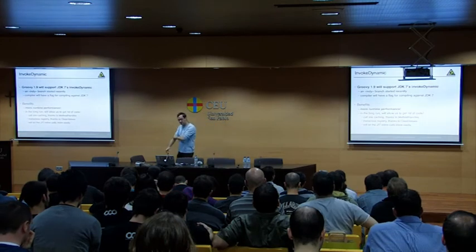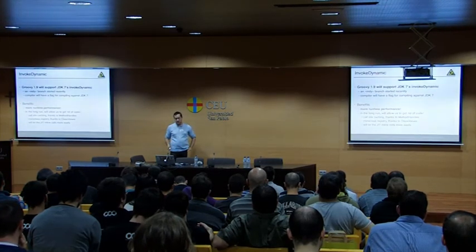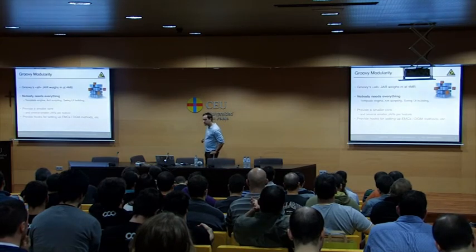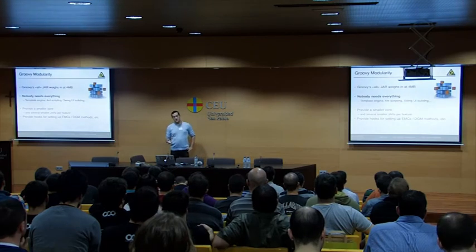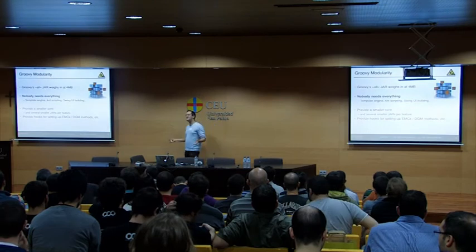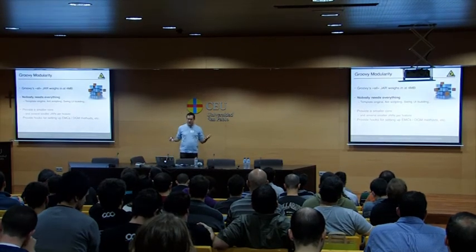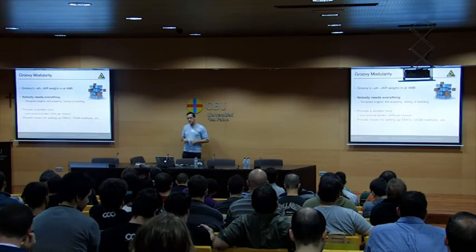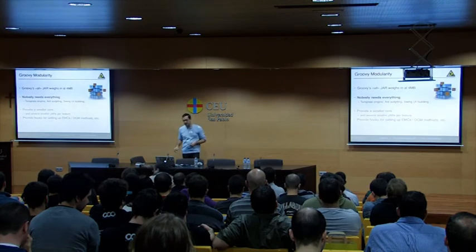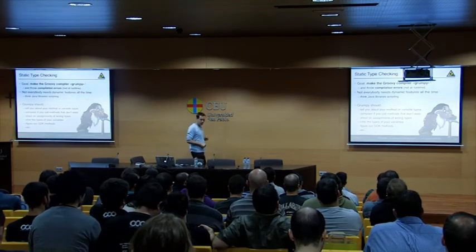We're also making Groovy more modular. The Groovy jar is already above four megabytes and not everybody needs everything — if you don't care about Swing UI, template engines, etc., perhaps you just need the core language plus a template engine. We'll try to make a smaller core jar with additional small jars, providing hooks to set up new dynamic methods like default Groovy methods from the Groovy JDK. This should be in Groovy 1.9.